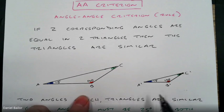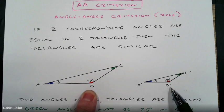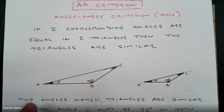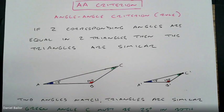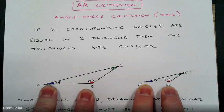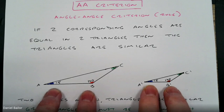I have two triangles here. You can see they're similar because of the AA Criterion. Angle B and angle B' are both 140 degrees, and the A's are both 15 degrees. They have two corresponding angles — the letters match — that are equal. So these triangles are similar. I don't have to measure the sides, dilate, translate, reflect, or rotate. I know these triangles are similar because these angles are the same.